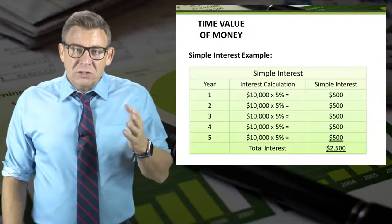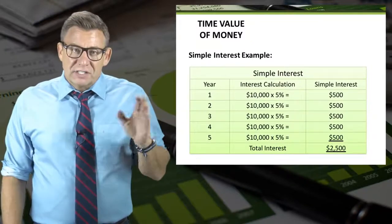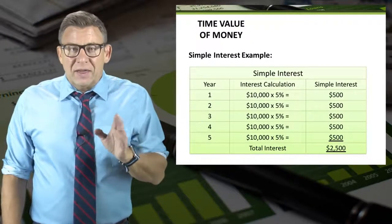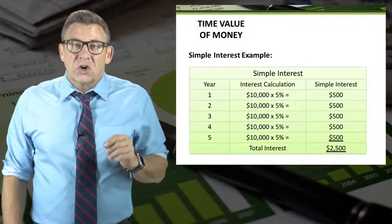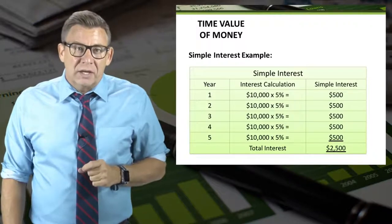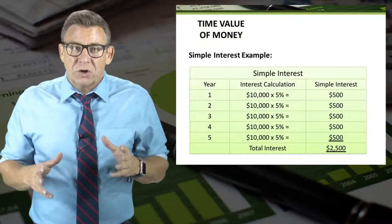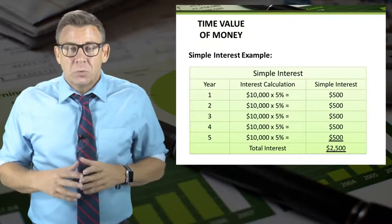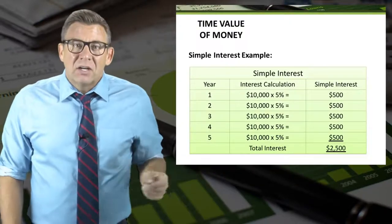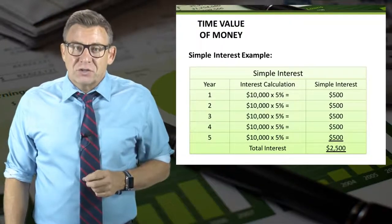Here's an example of simple interest. As you can see, that $10,000 earning 5% annually results in $500 of interest per year. Over five years, that's $2,500 of interest earned.